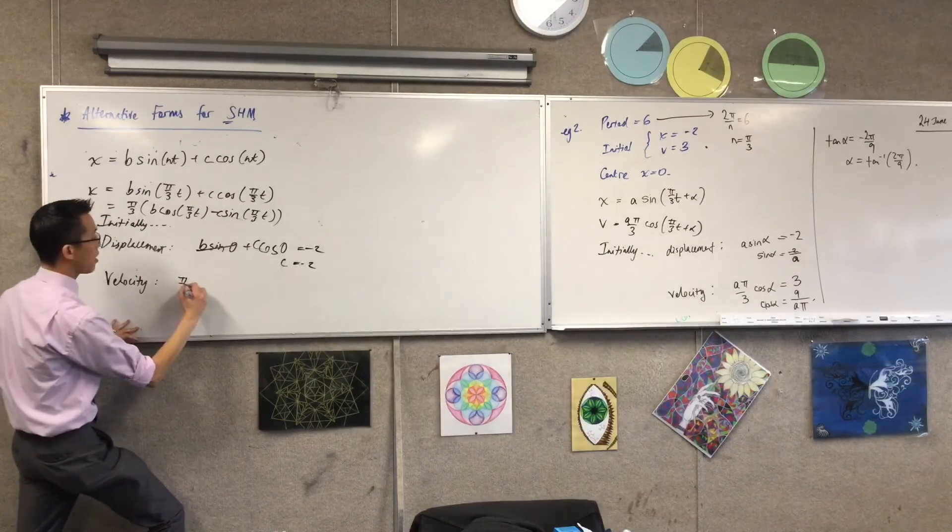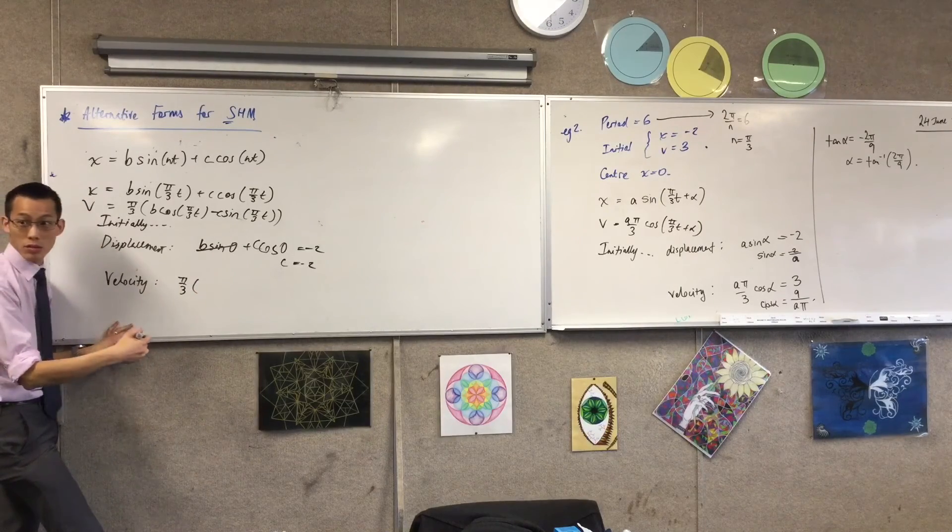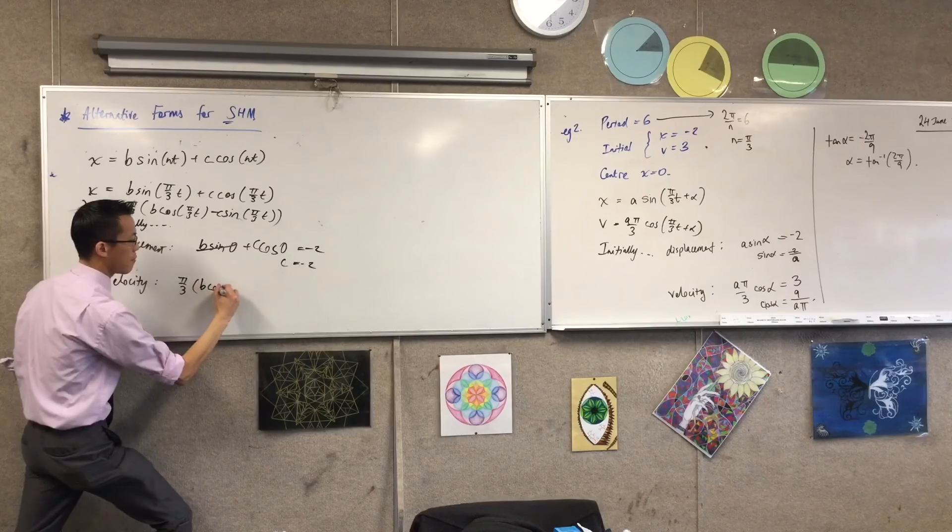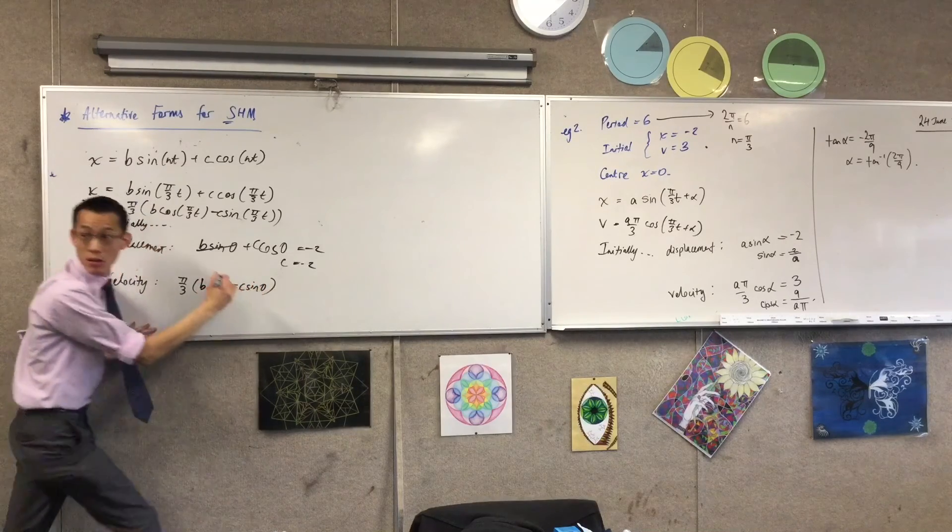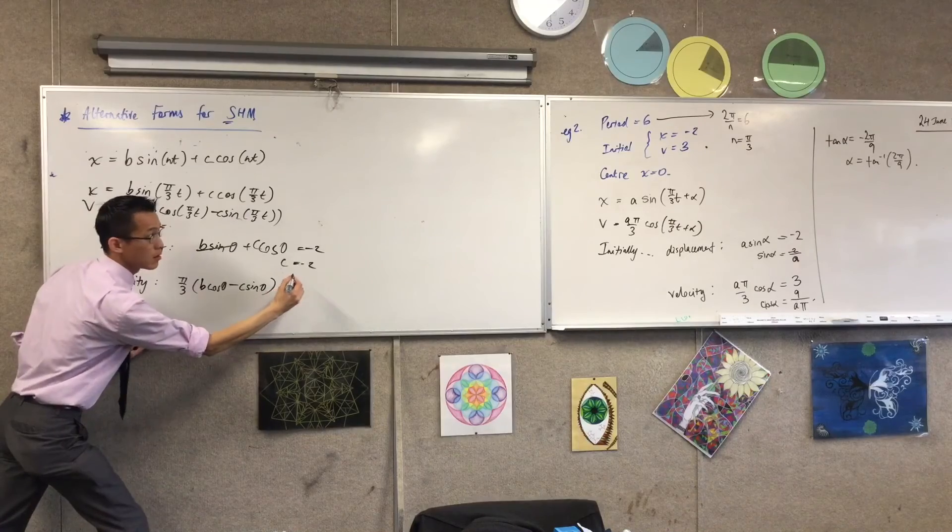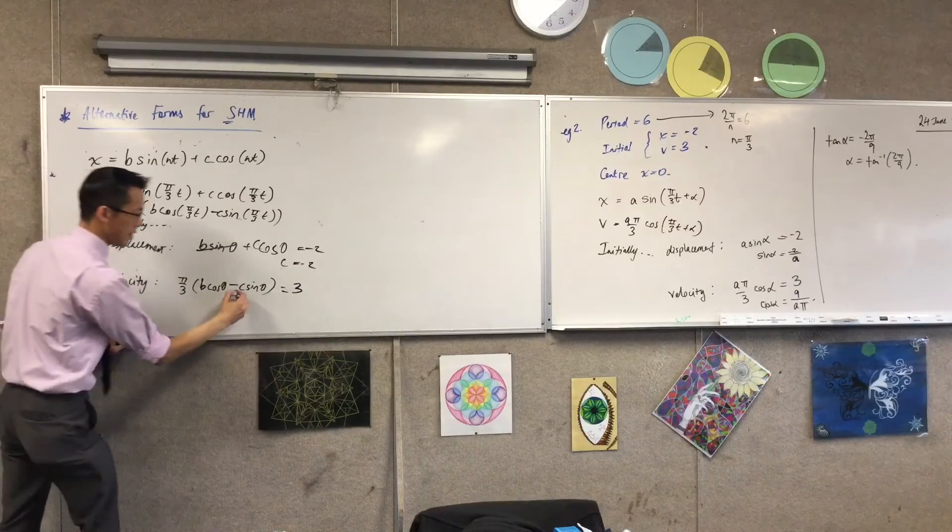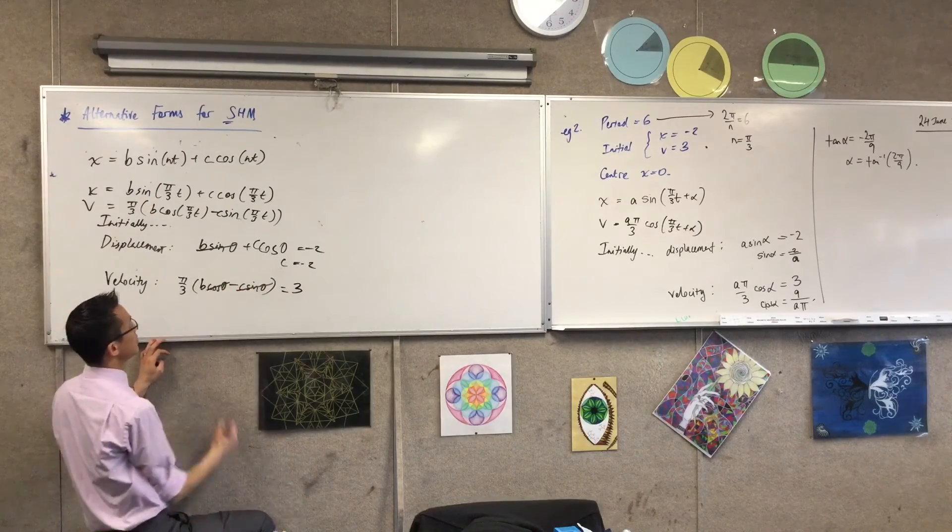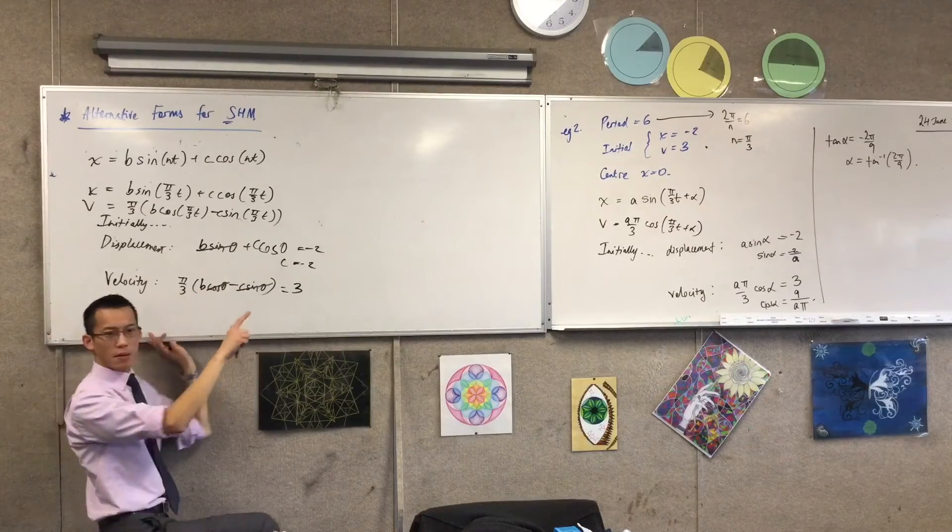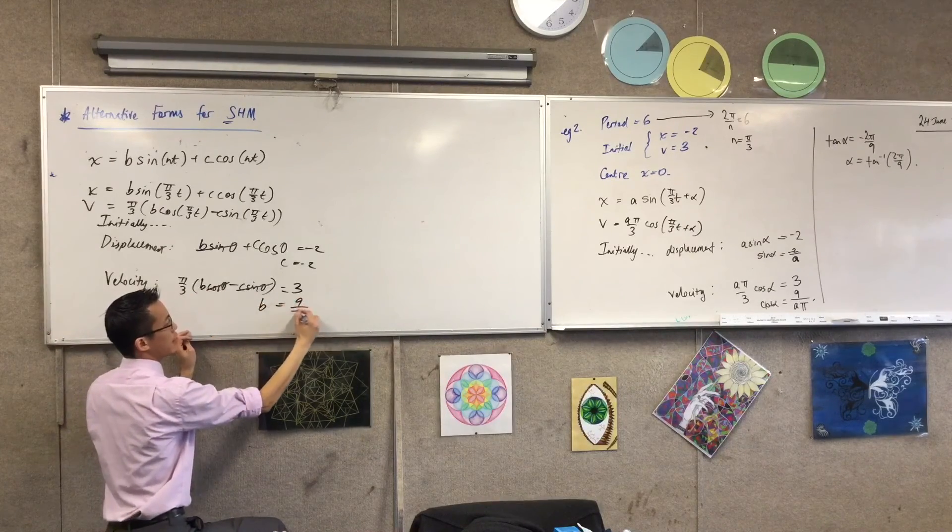Then I use velocity to find the other one. Velocity. Here we go. This is π on 3 outside of. What's inside here? This is t equals zero, right? So I've still got a B cos zero. I've got a minus C sine zero. What's that equal to? What's the initial velocity? It's three. Thank you. The question told me. That's zero. What do we have left here? That's one. I'm going to multiply both sides by 3 on π. So that gives me 9 on π.